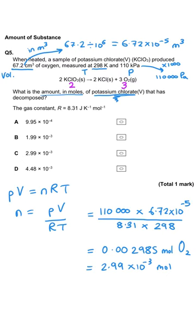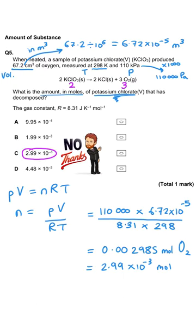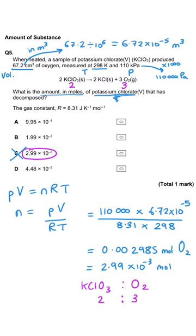That is the moles of oxygen gas produced, not the moles of potassium chlorate — that's why 2.99 × 10⁻³ is included as a distractor option. The ratio of potassium chlorate to oxygen is 2:3, so we divide the moles by 3 and multiply by 2, giving 1.99 × 10⁻³ moles. So B is the correct answer.